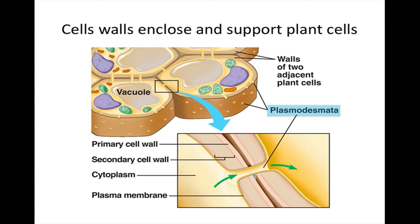The cell wall is one feature that distinguishes plant cells from animal cells. This rigid cellular structure not only provides protection, but provides skeletal support that keeps plants upright on land. To function in a coordinated way as part of a tissue, cells must have cell junctions — structures that connect them to one another. Numerous plasmodesmata channels between adjacent plant cells form a circulatory and communication system connecting the cells in plant tissue. Through plasmodesmata, plants share water and other nourishment.